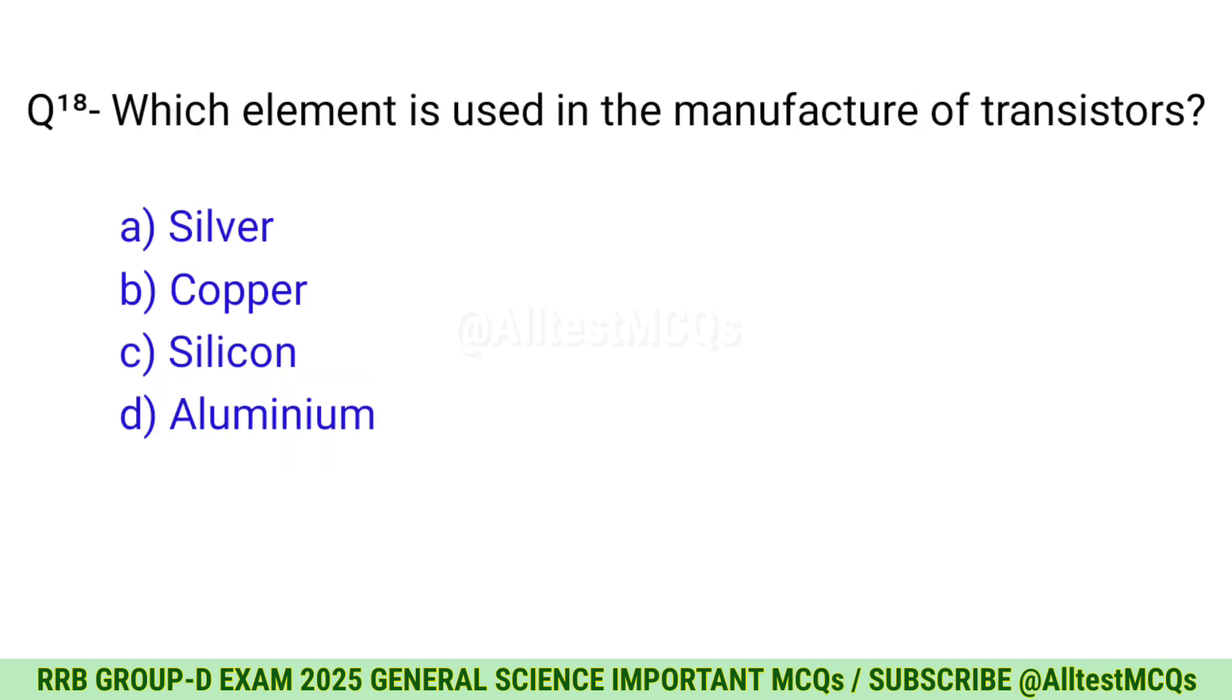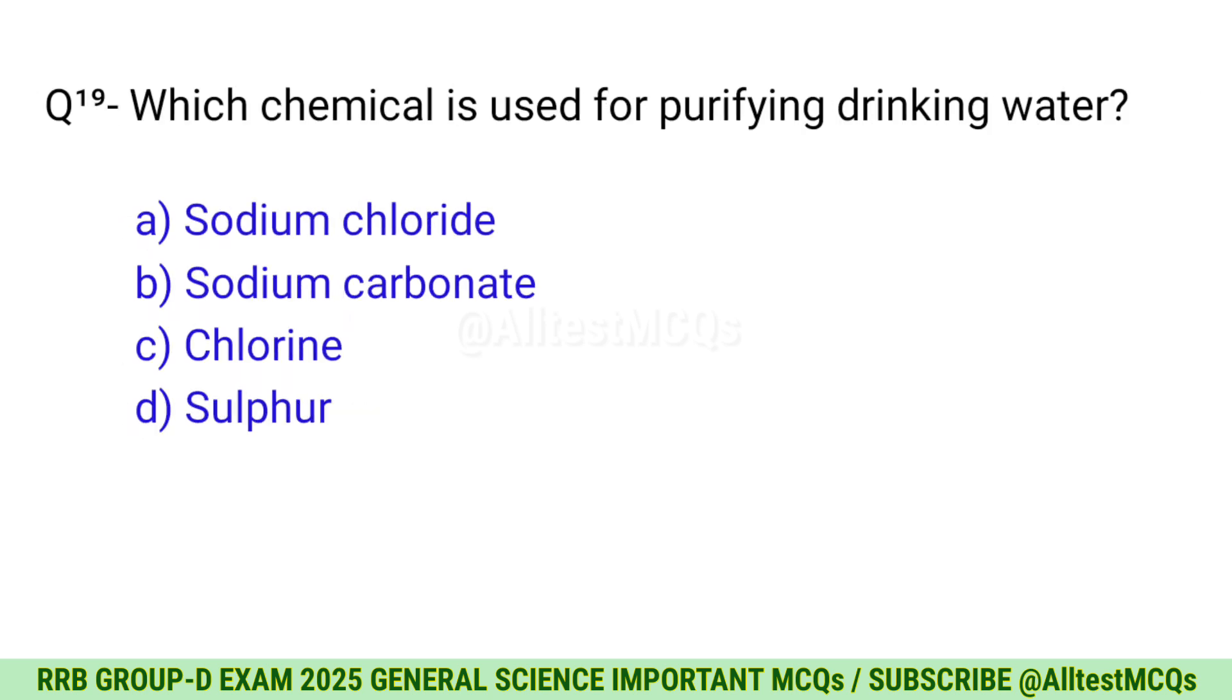Question 18: Which element is used in the manufacture of transistors? Correct option is C, Silicon. Question 19: Which chemical is used for purifying drinking water? Correct option is C, Chlorine.